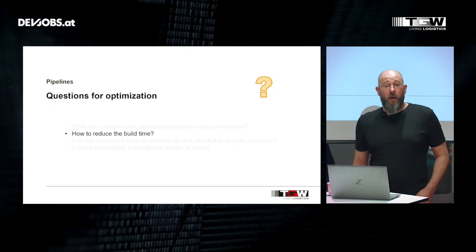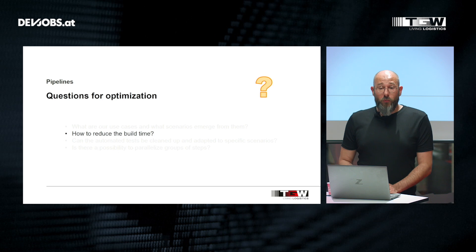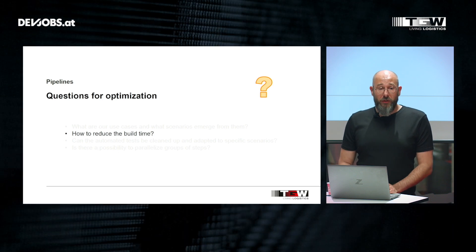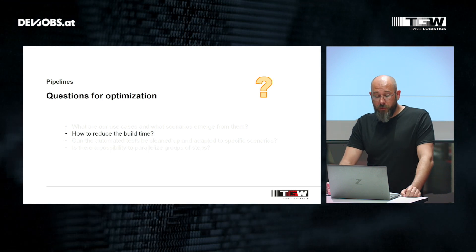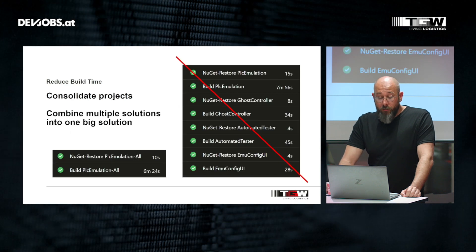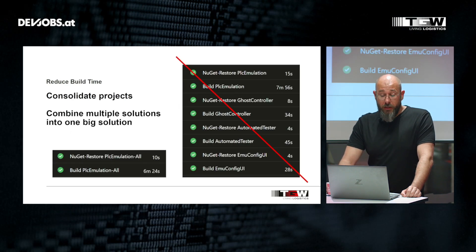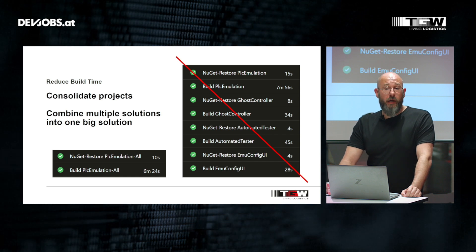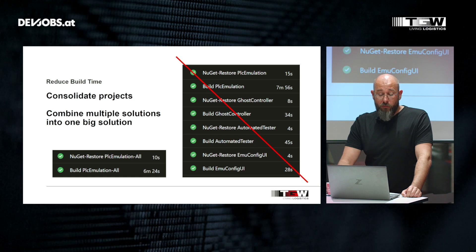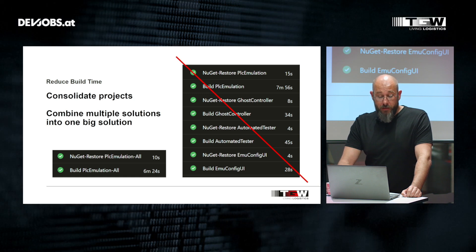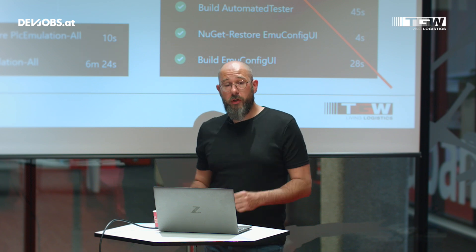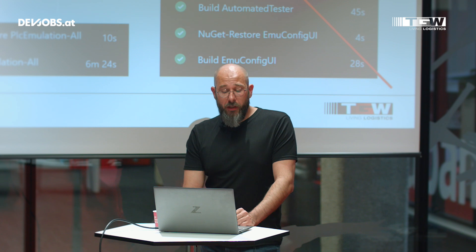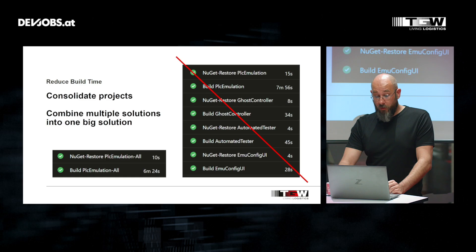So now we know how to skip various steps. But what about the one step we cannot skip in a build pipeline: the build itself? In our example, we have four .NET solutions. The biggest one has over 100 projects, and the whole build runs about 10 minutes. By combining the four solutions into one, consolidating projects, merging smaller projects, and deleting deprecated ones, we got down from 10 minutes to about six and a half minutes.